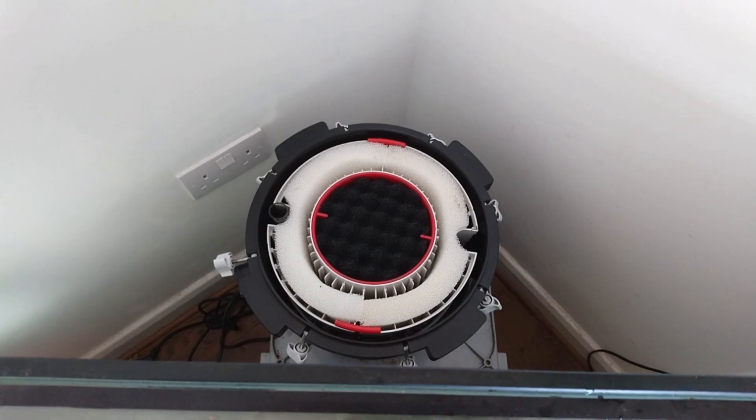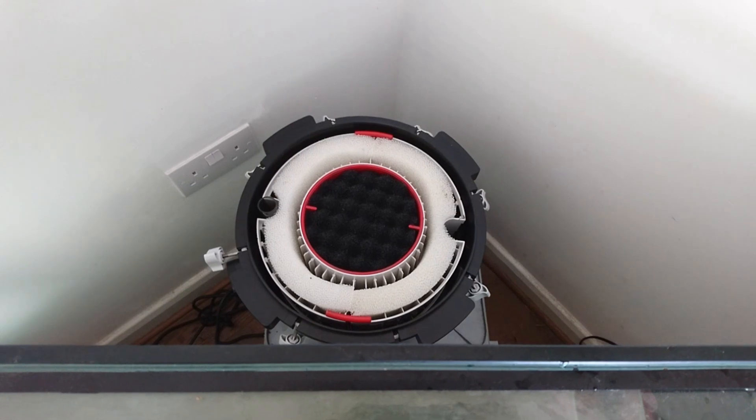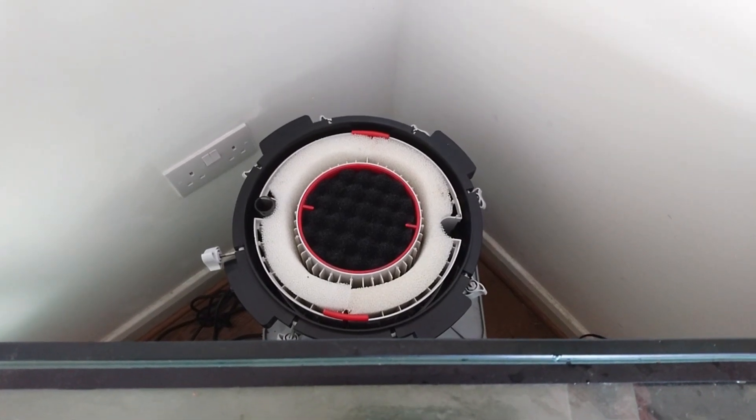Once you get your filter in the position you want it, before you put the lid on, fill it up with at least 6 litres of water. This will allow the pump to prime itself. Once you've done that, put the lid on.